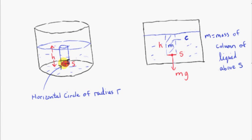We are going to get the pressure at a particular point in a liquid. This point is directly below the surface of the liquid. The vertical distance to the surface, or the depth, is h. To get the pressure at this point, we consider the pressure on a horizontal circle of radius r centered at this point — just some small circle centered at the point.